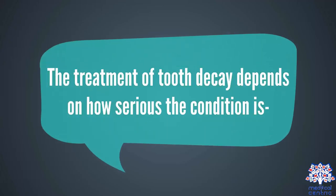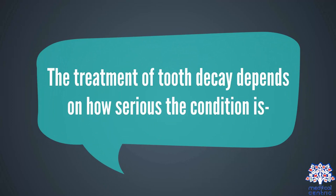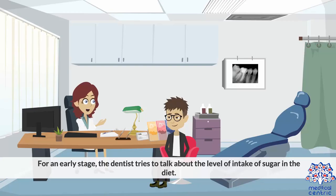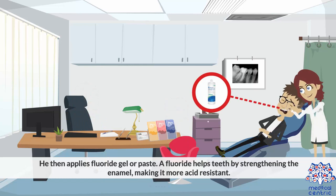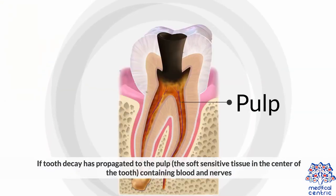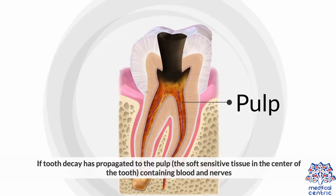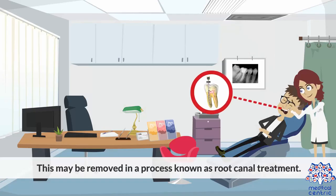Treatment. The treatment of tooth decay depends on how serious the condition is. For an early stage, the dentist tries to talk about the level of intake of sugar in the diet. He then applies fluoride gel or paste. Fluoride helps teeth by strengthening the enamel, making it more acid resistant. If tooth decay has propagated to the pulp — the soft, sensitive tissue in the center of the tooth containing blood and nerves — this may be removed in a process known as root canal treatment.